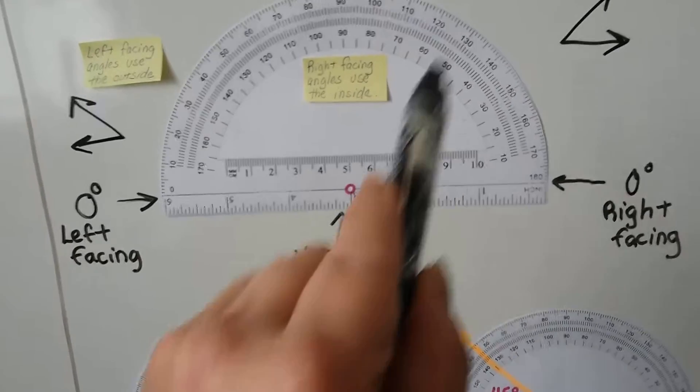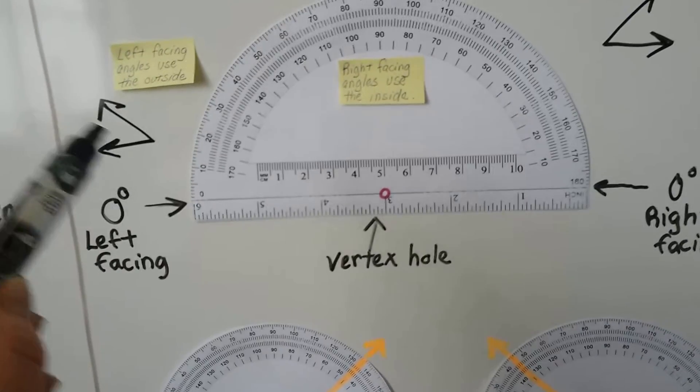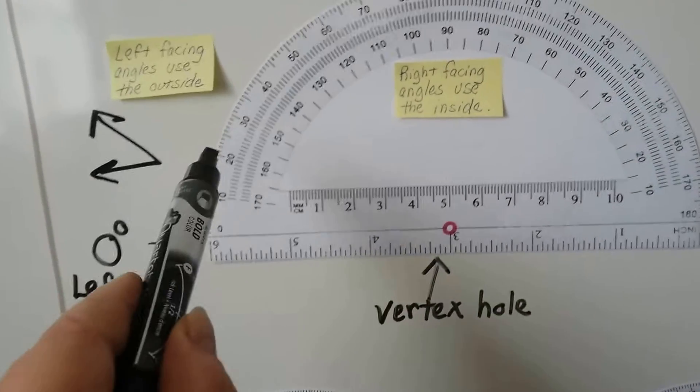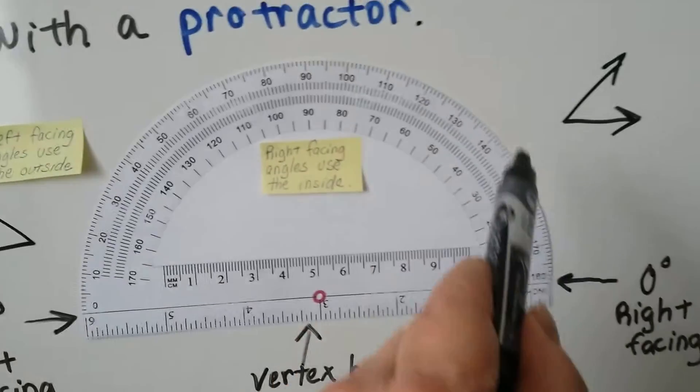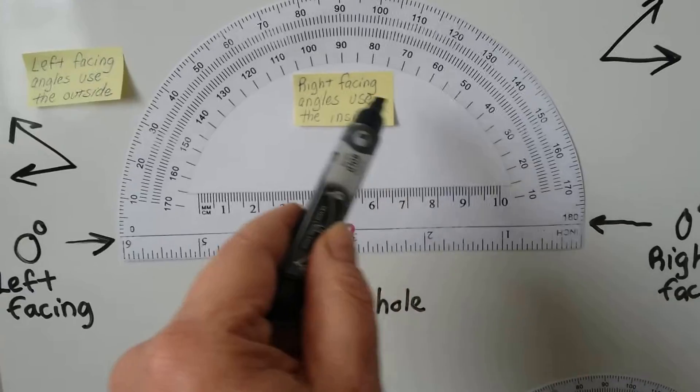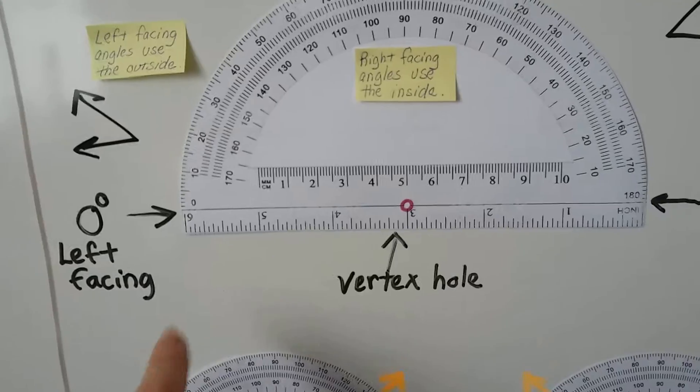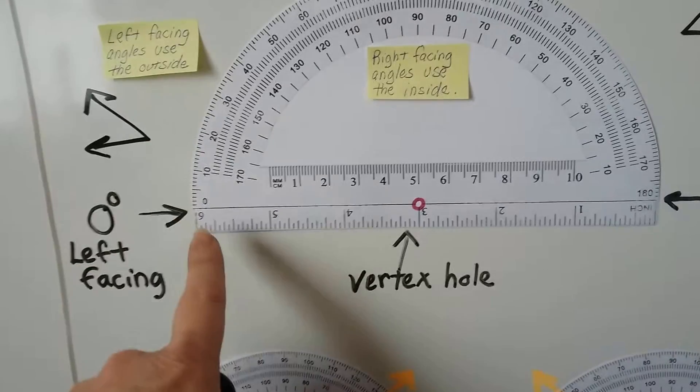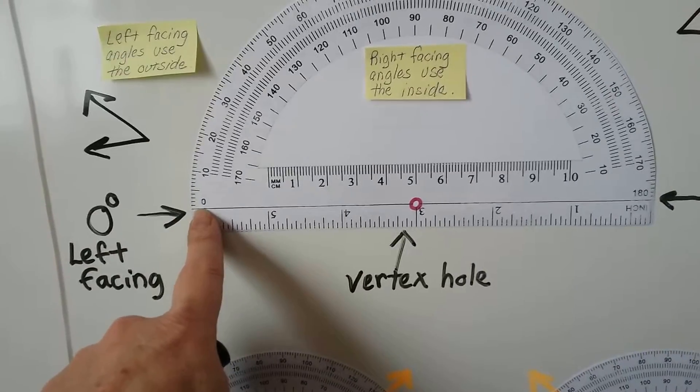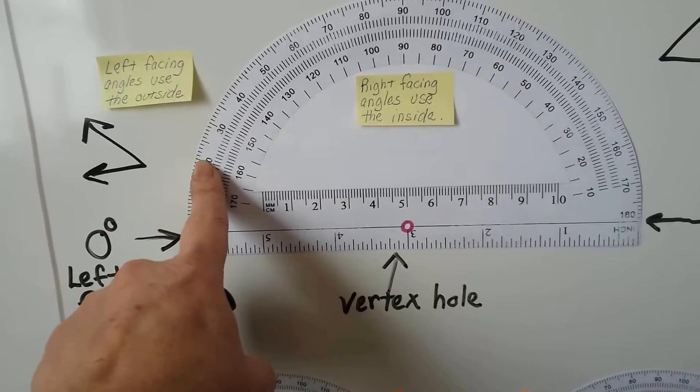If you want to draw an angle that's opening to the left, you use the outside measures along here. If you want to draw an angle that's opening to the right, you use the inside measures. For the outside measures of a left-facing angle, that would be 0 degrees. And then 1, 2, 3, 4, 5, 10, 15, 20. See that?